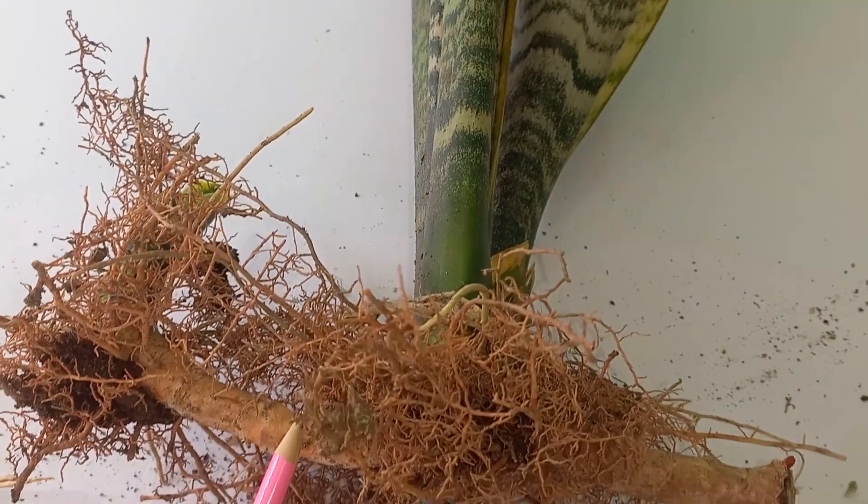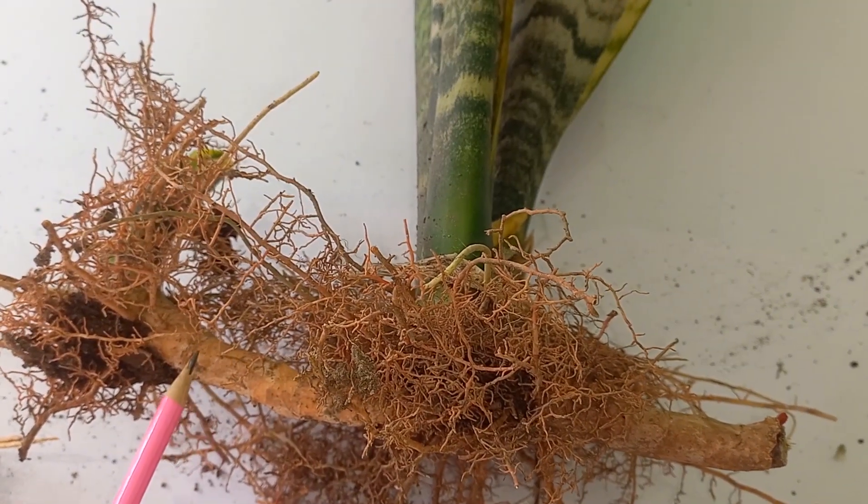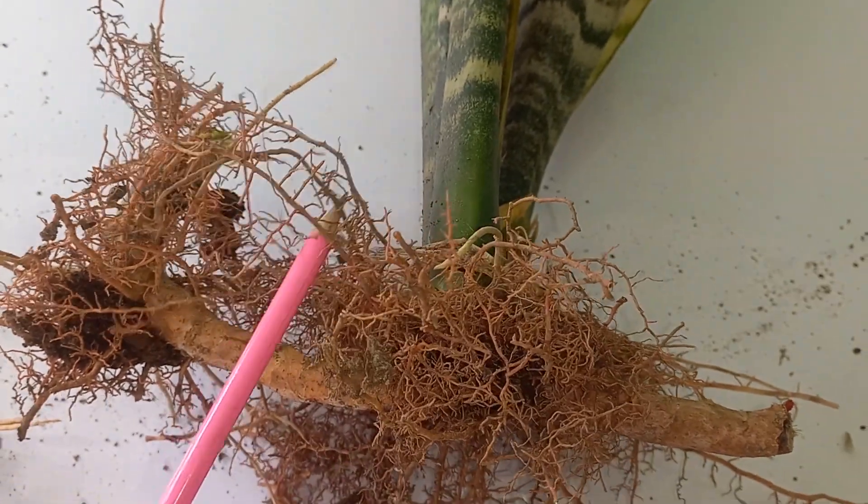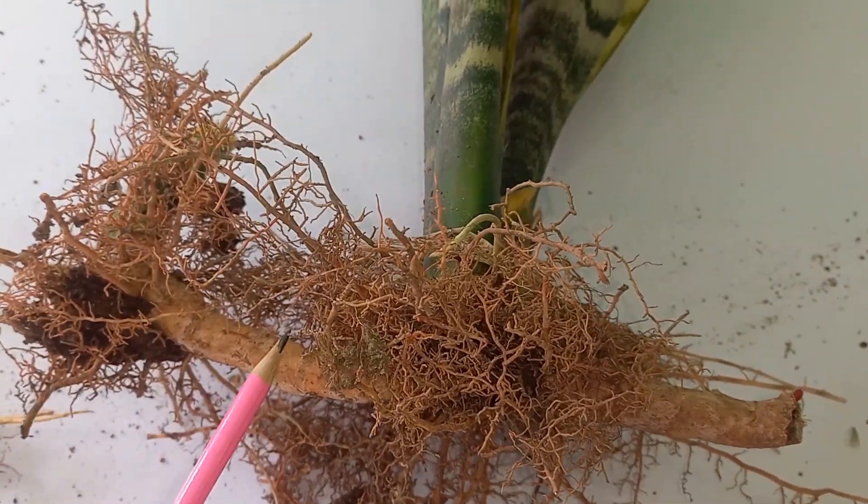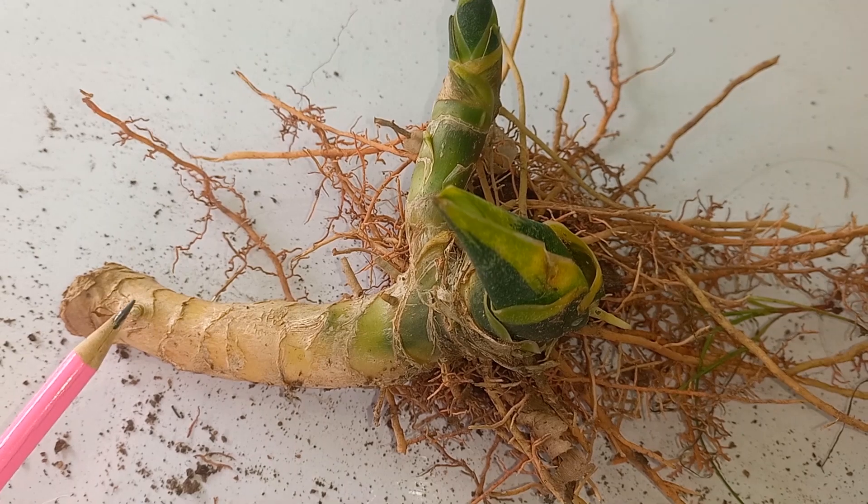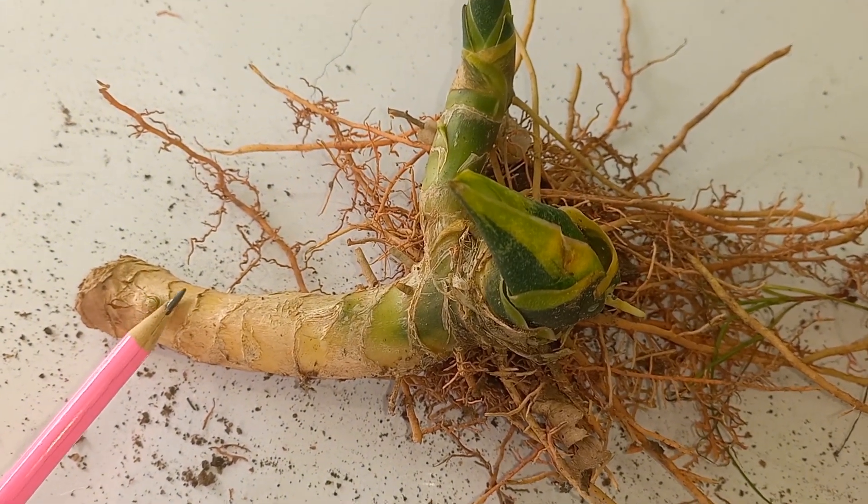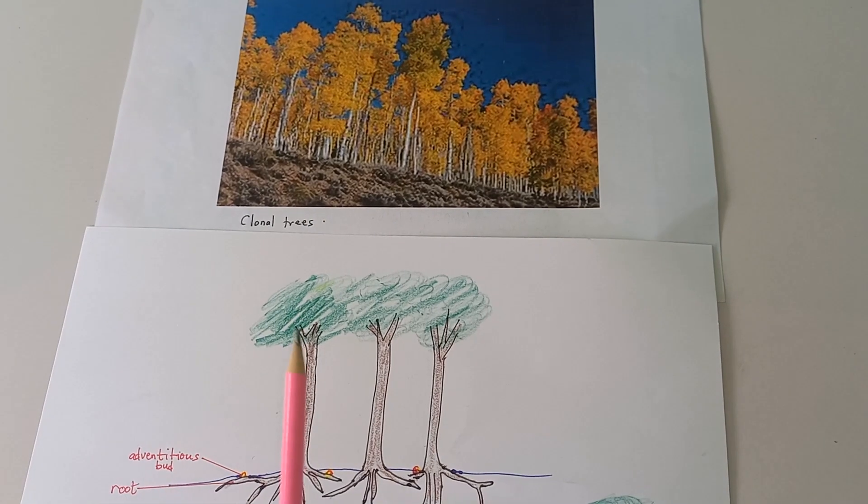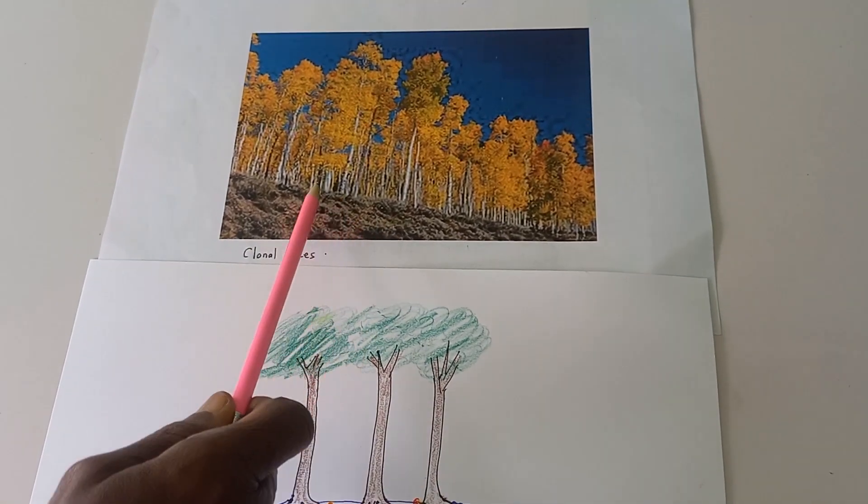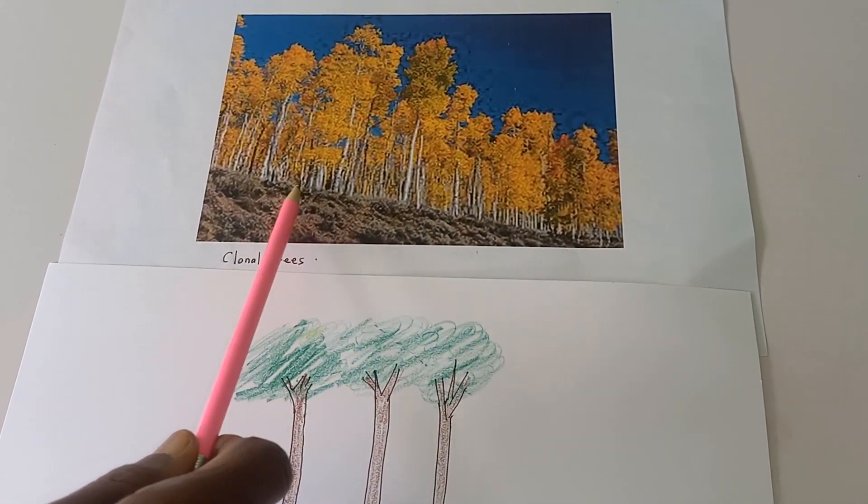This plant has an underground stem called rhizome, and these are the roots. They don't have buds, but the stem has a bud. There is a bud on part of the stem, and this bud can produce a new plant.